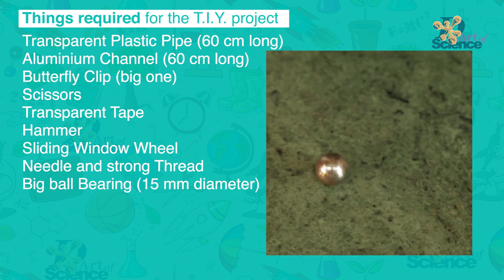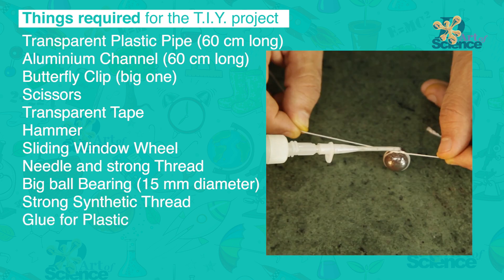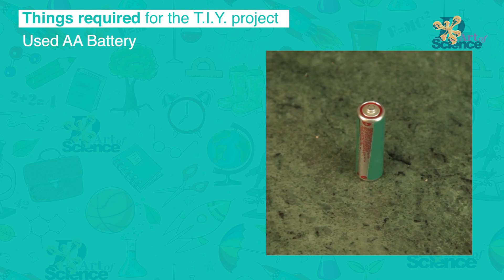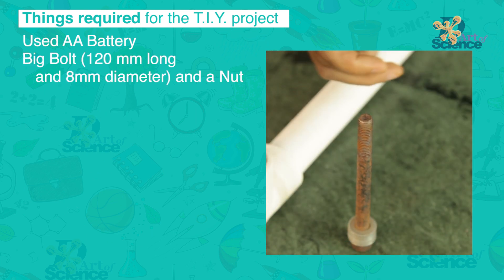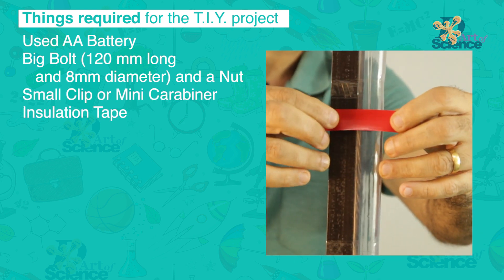Big ball bearing, around 15mm in diameter. Strong synthetic thread. Glue for plastic. Flat metal pieces from a toy set. Used AA battery. Big bolt and a nut, around 120mm long and 8mm in diameter. A small clip or a mini carabiner. Insulation tape.